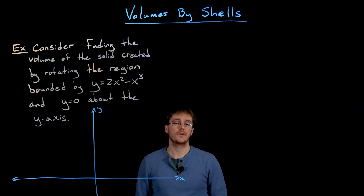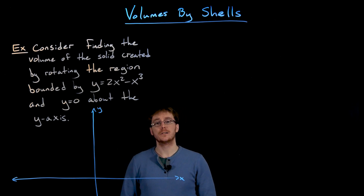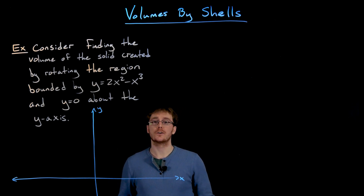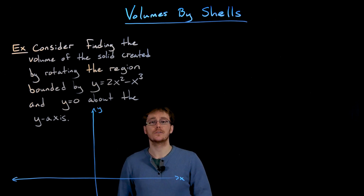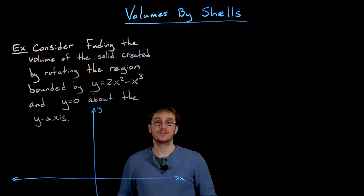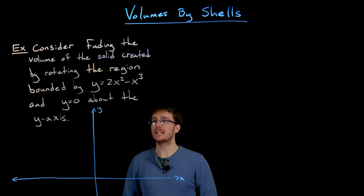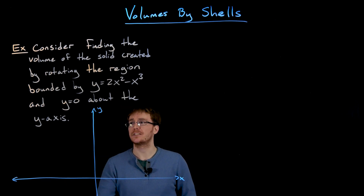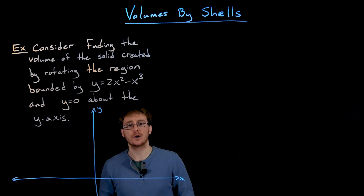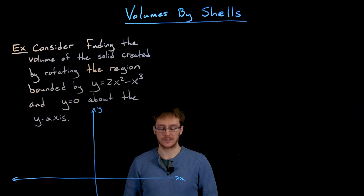Welcome back everyone. Up next I want to talk about another method we can use to help us find the volumes of our solids of revolution. This method is going to be called volume by shells or volume by cylindrical shells. In this example we want to find the volume of the solid created by rotating the region bounded by y equals 2x squared minus x cubed and y equals zero about the y-axis.